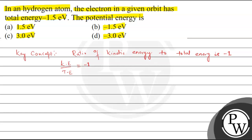Now let's see what is given in the question. Given, total energy is equal to minus 1.5 electron volts. We know total energy is equal to kinetic energy plus potential energy. And we also know kinetic energy upon total energy is equal to minus 1.